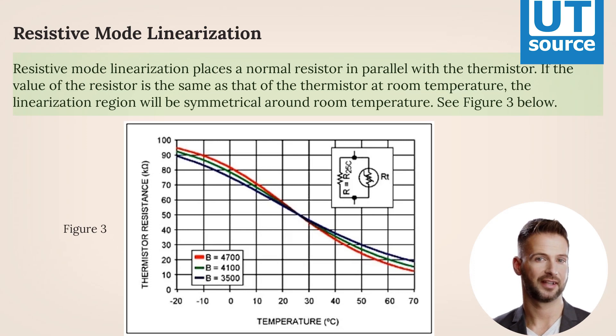Resistive Mode Linearization places a normal resistor in parallel with the thermistor. If the value of the resistor is the same as that of the thermistor at room temperature, the linearization region will be symmetrical around room temperature. See figure 3 below.